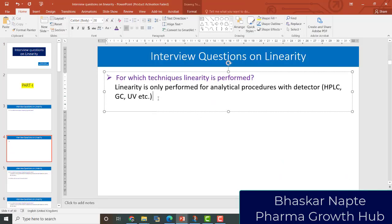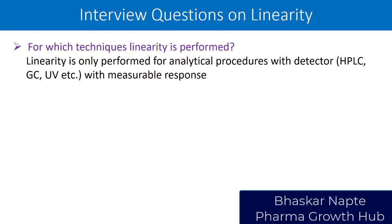So the answer is that linearity is only performed for analytical procedures with detectors — like HPLC, GC, UV, etc. — that give a measurable response. Even UV spectroscopy used for an identification test would not qualify, because in that procedure you are not measuring any quantifiable response. The detector is very important, and it must give a measurable response such as peak area or peak height, which can be compared against varied concentrations.